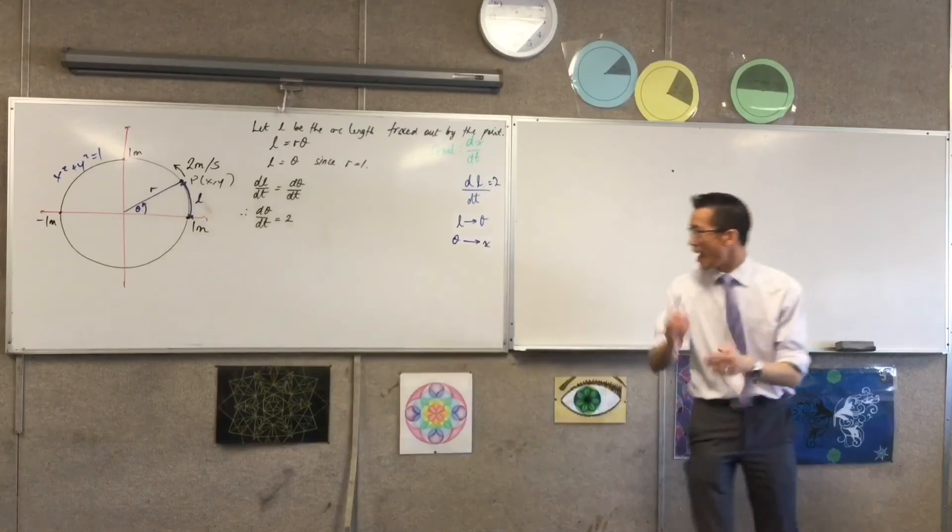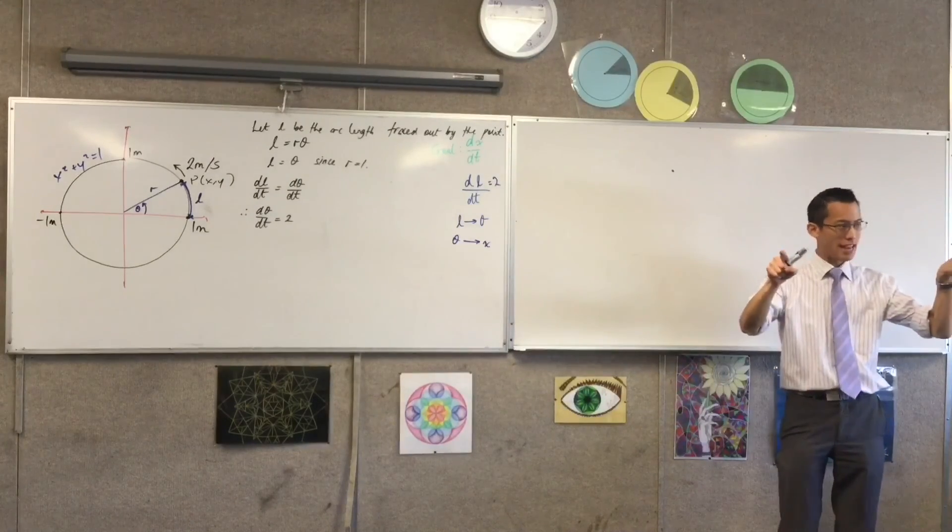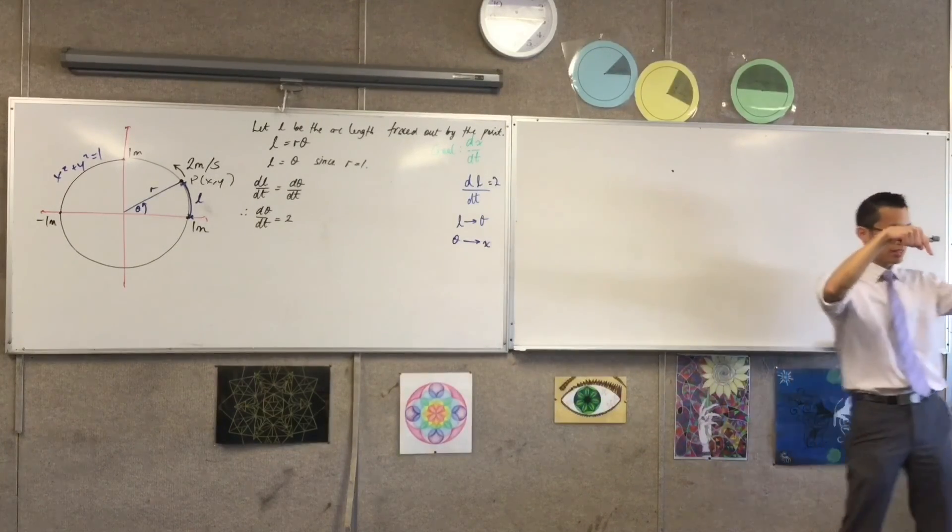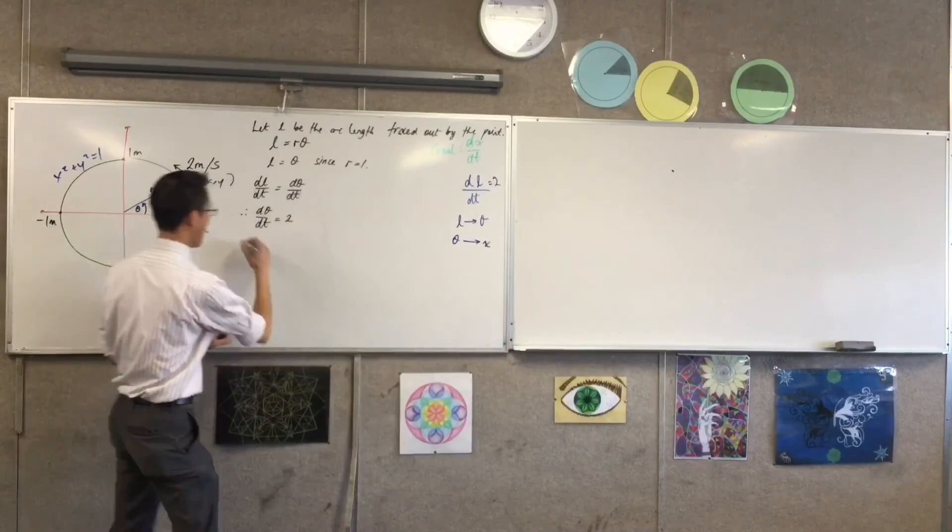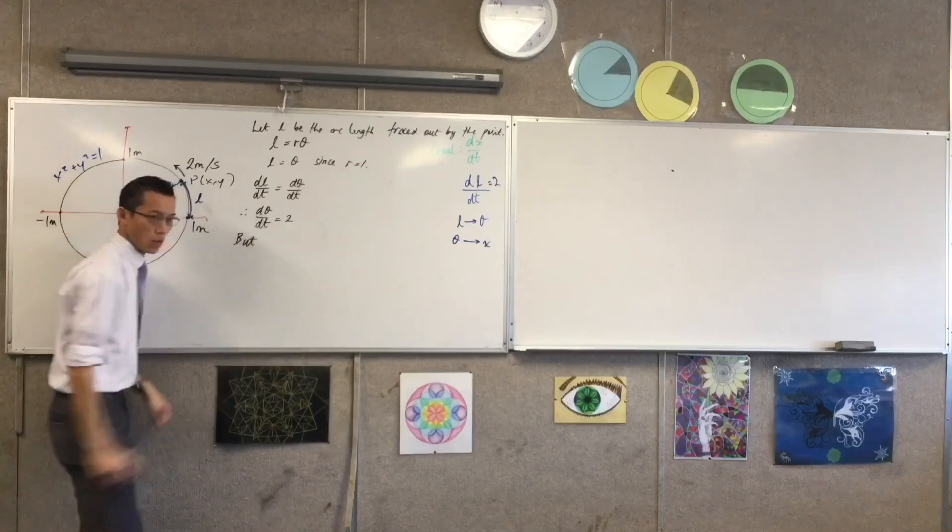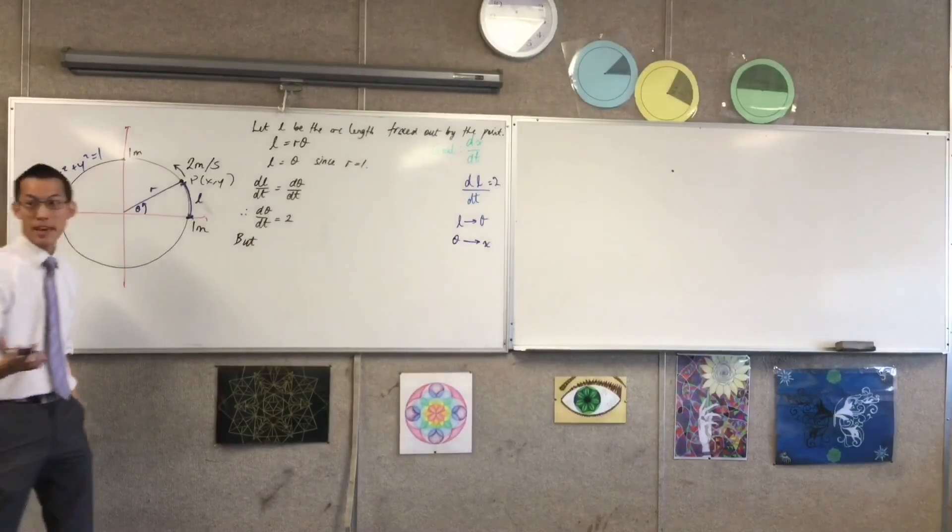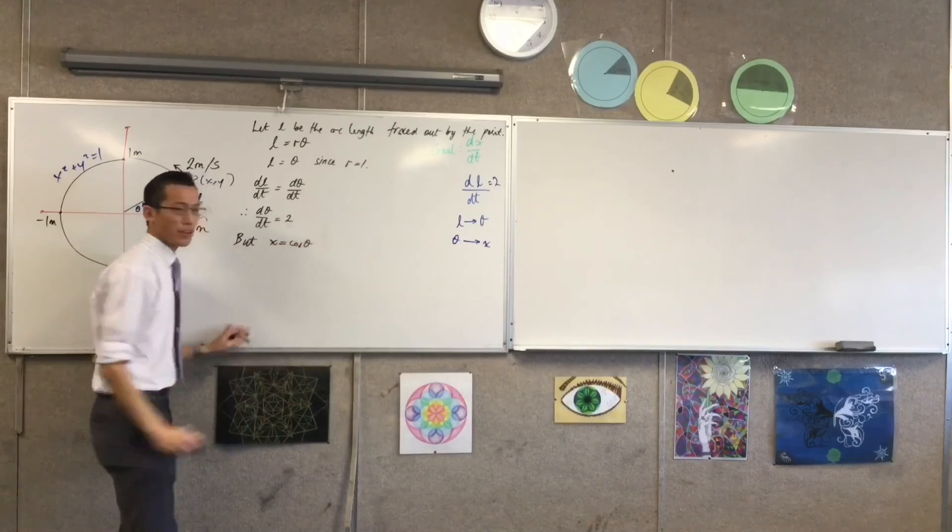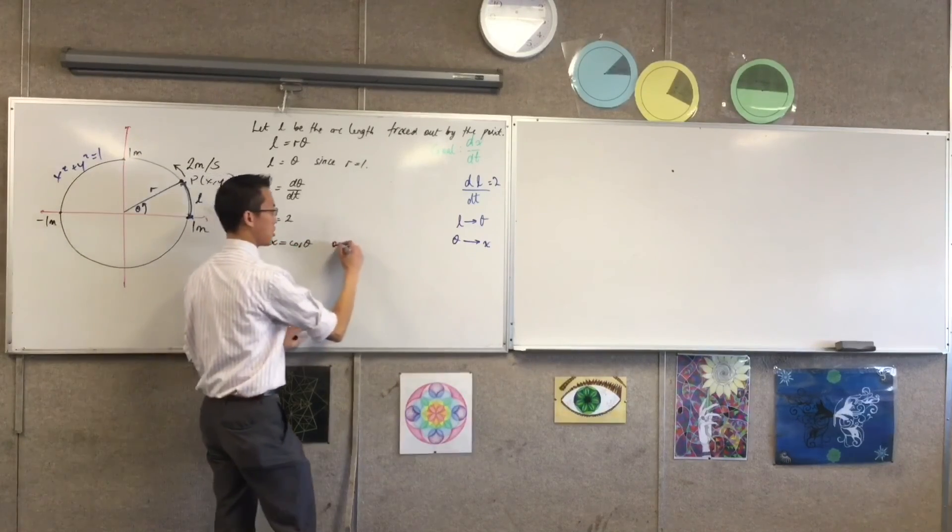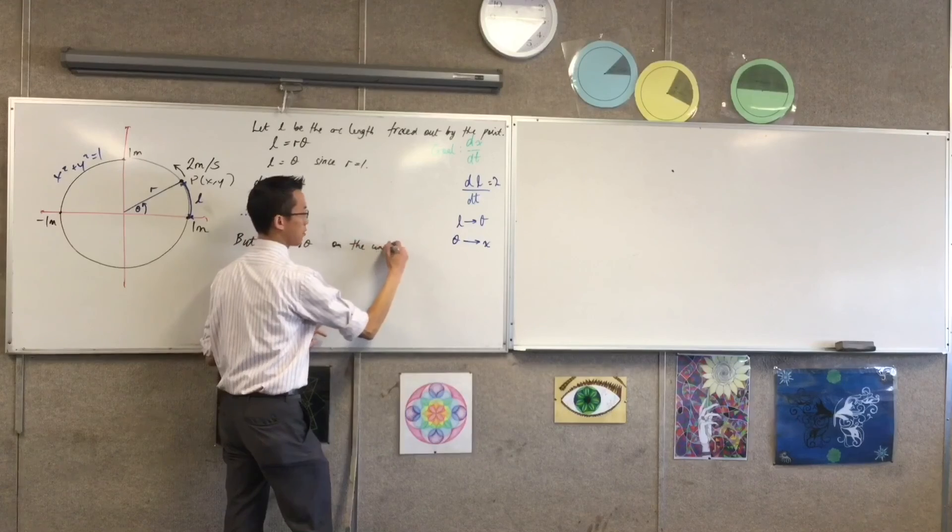I've used my L to theta bridge, and now I've got to go from theta to x. So, I need the relationship between those two, right? So, I'm going to say, but, what's the relationship between x and theta? We said it before, right? Good. I'm going to say x equals cos(theta) on the unit circle, right? Like, where does this come from?